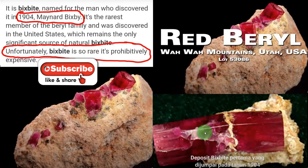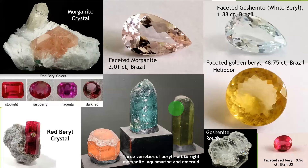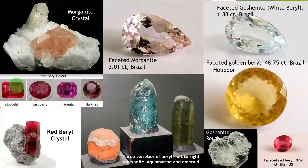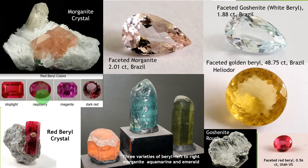You can't see these stones in other countries — if you do, it is synthetic. Look at the red beryl colors. This is a red beryl crystal with the mother stone. Look at the beryl shape. You know the color of traffic stop lights — that is one color in bixbite: stop light red, which is very expensive. One more color is raspberry red, which is a purplish red or magenta color. Then dark red. There are four color varieties in red beryl.